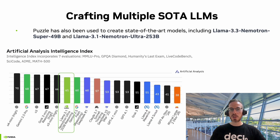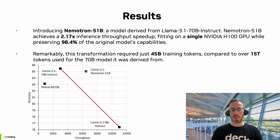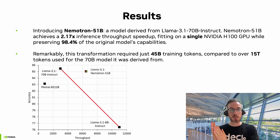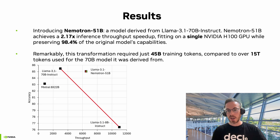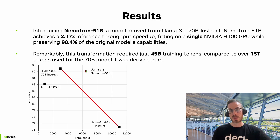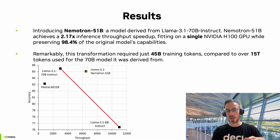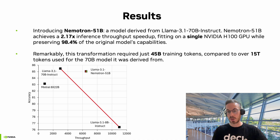As we've said, Puzzle was used to craft multiple state-of-the-art LLMs, but in the paper we zoom into Mnemotron 51B and compare it head-to-head with its parent model, LLAMA 3.1 70B Instruct. Mnemotron 51B achieves more than two times the inference throughput speedup compared to the parent model, fitting with a significant batch size on a single NVIDIA H100 GPU, and preserves more than 98% of the original model's capabilities. We also used only 45B training tokens to do that, compared to over 15 trillion training tokens for the original model.